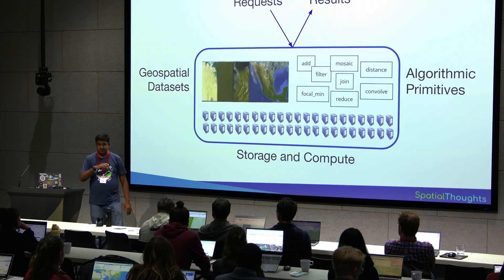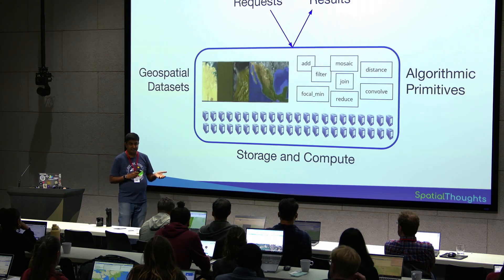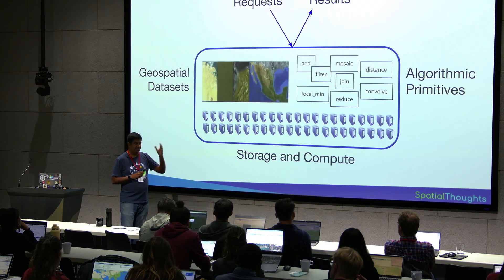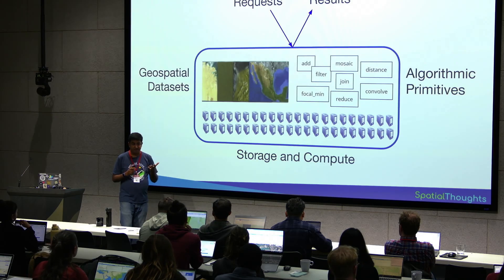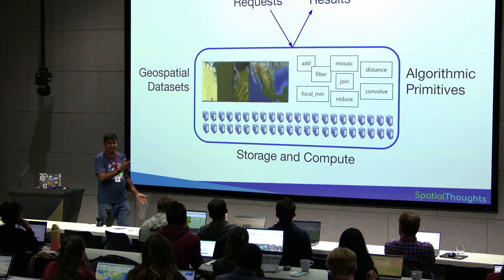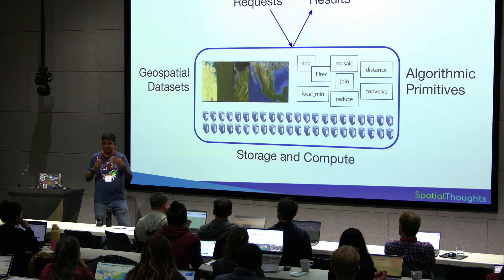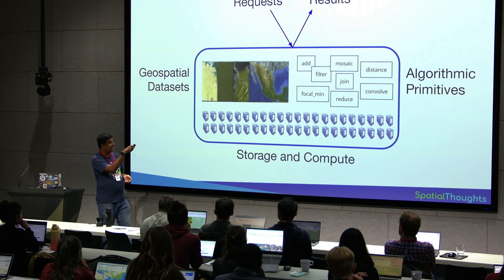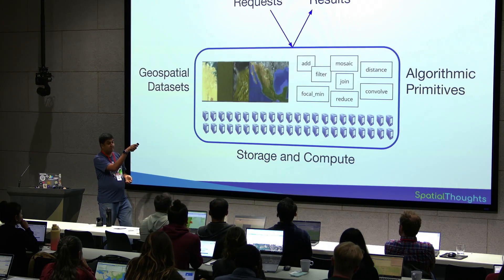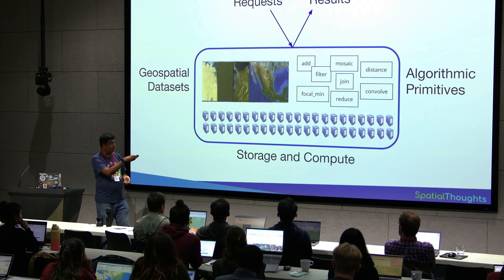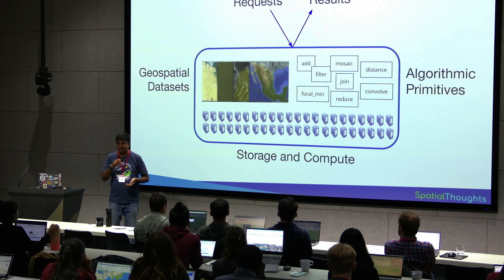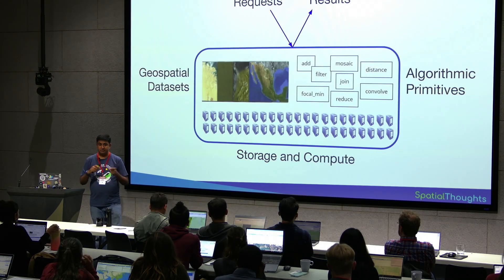You only get the output — no intermediate products. If you did some analysis to find the surface water area for your country and asked for a number, all the analysis happens on the server. All you get back is a number. It doesn't send all the intermediate results. So it's a very lightweight system: you send your request, all the processing happens on the server, and you get the results back. To allow Earth Engine to distribute computation across many machines, you have to write code so Earth Engine can understand how to distribute it.